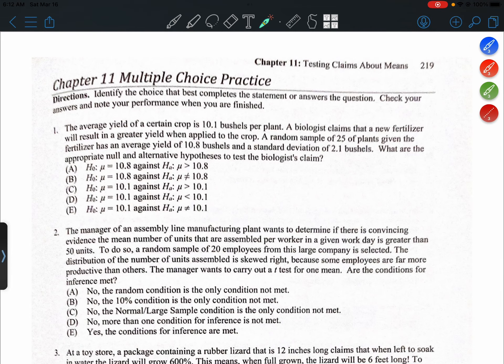Question 1. The average yield of a certain crop is 10.1 bushels per plant. A biologist claims that a new fertilizer will result in a greater yield when applied to the crop.